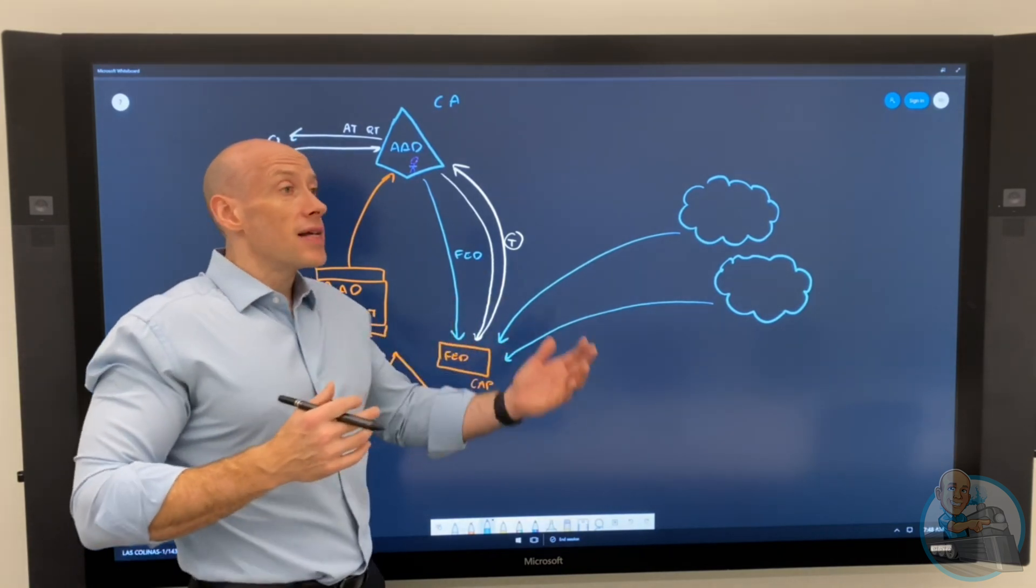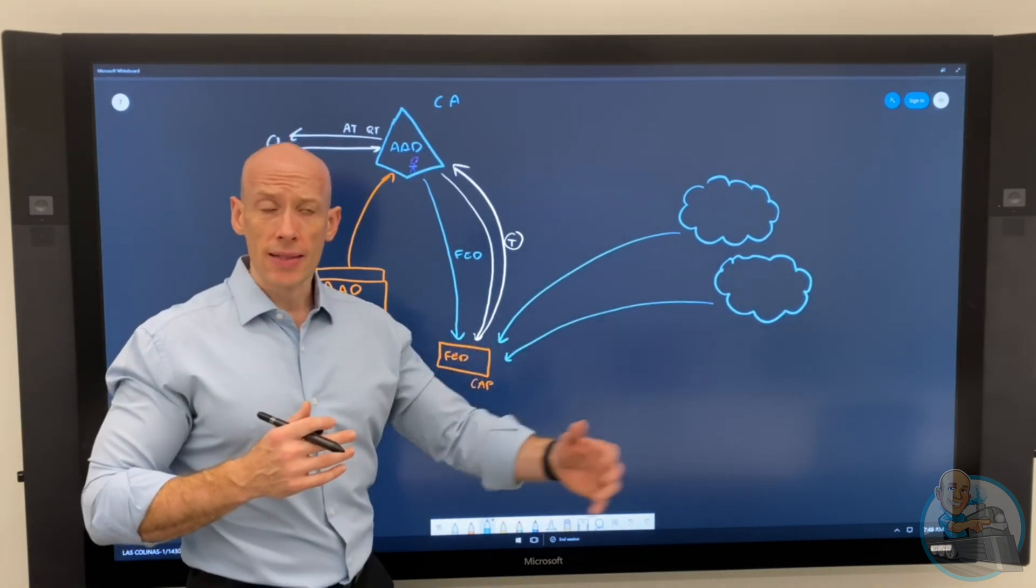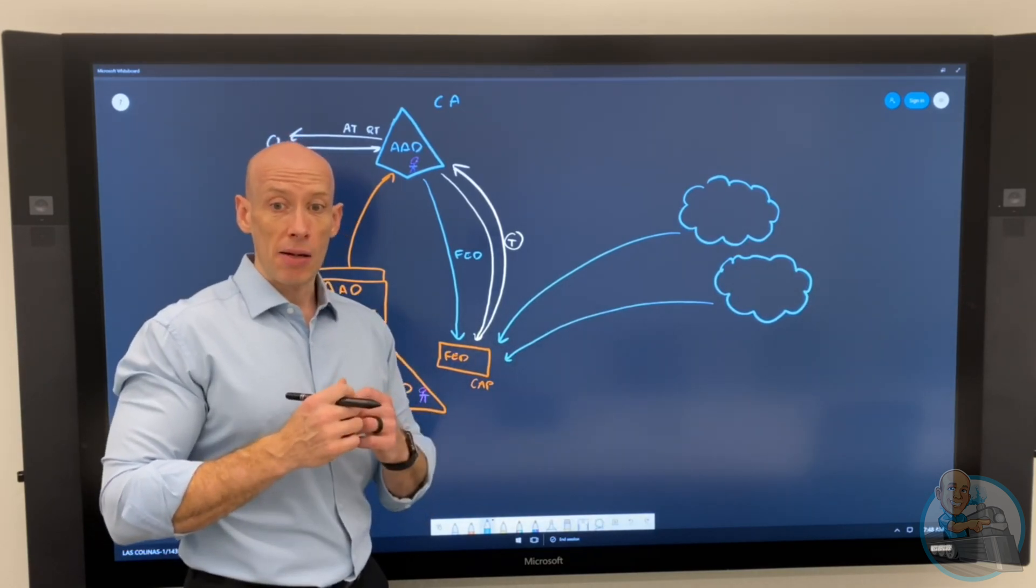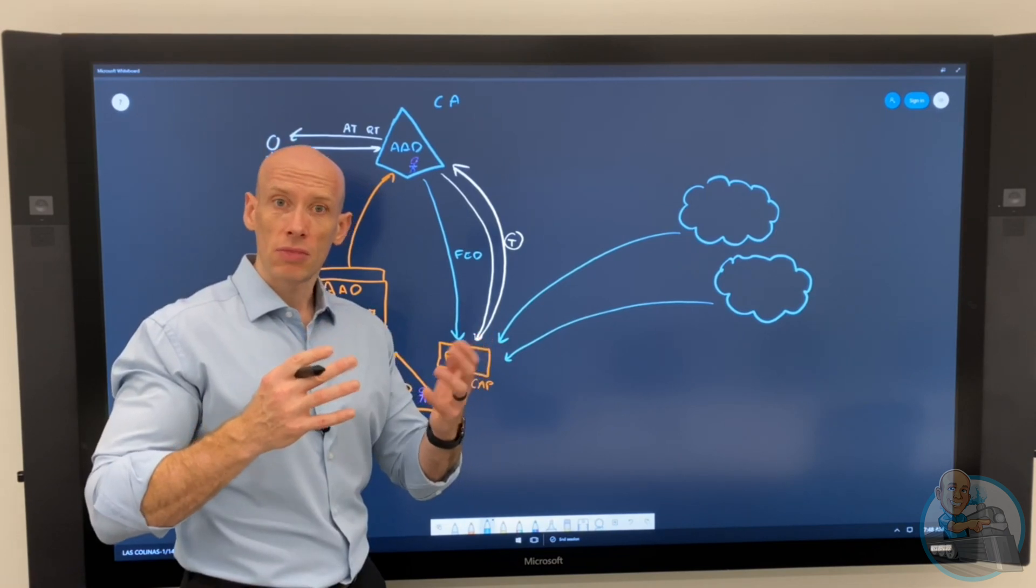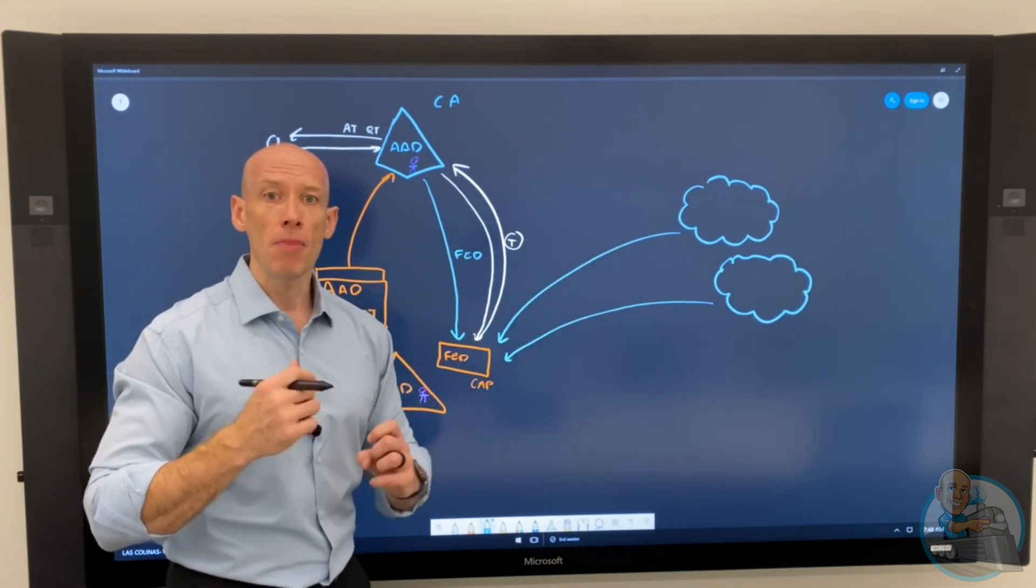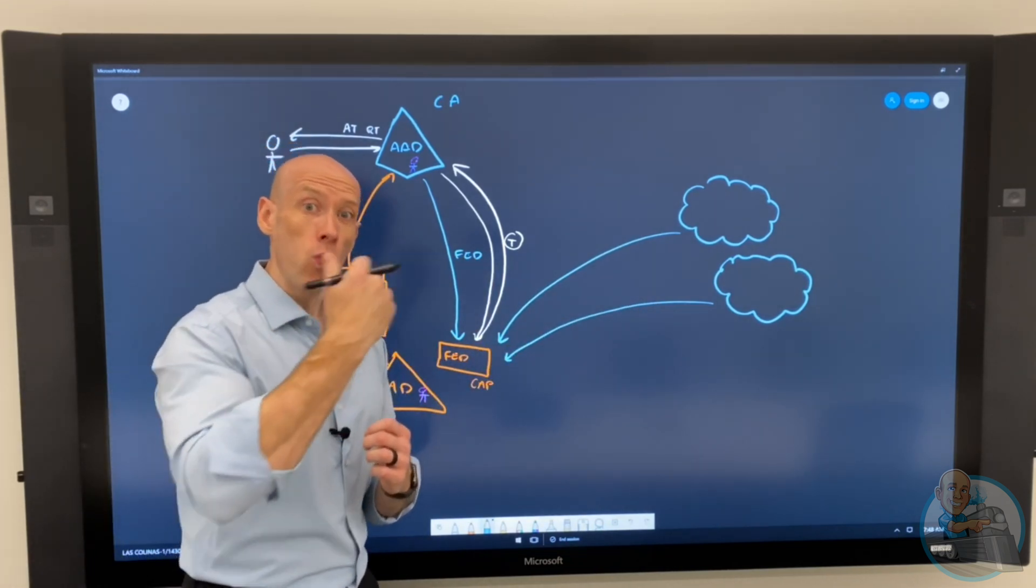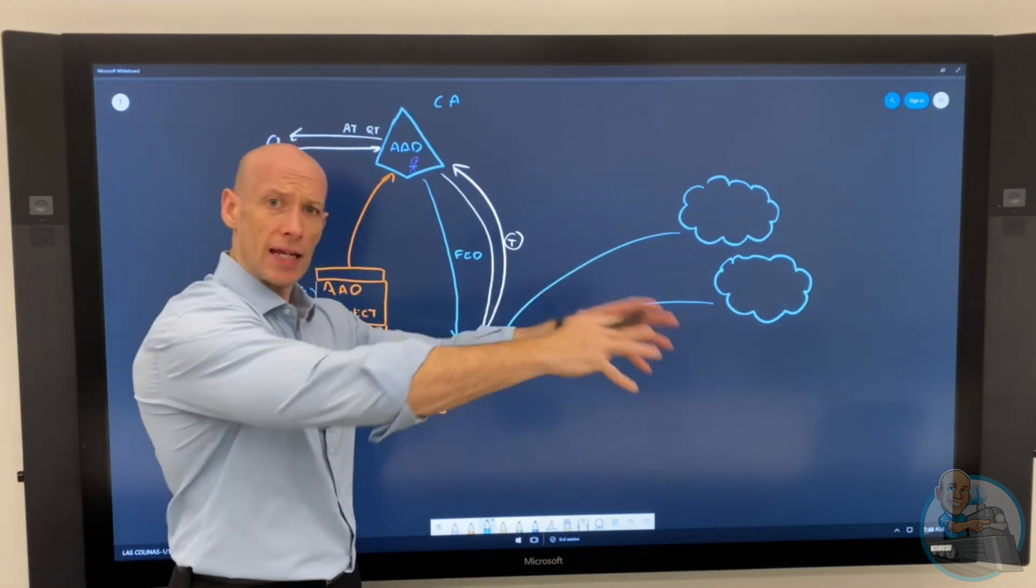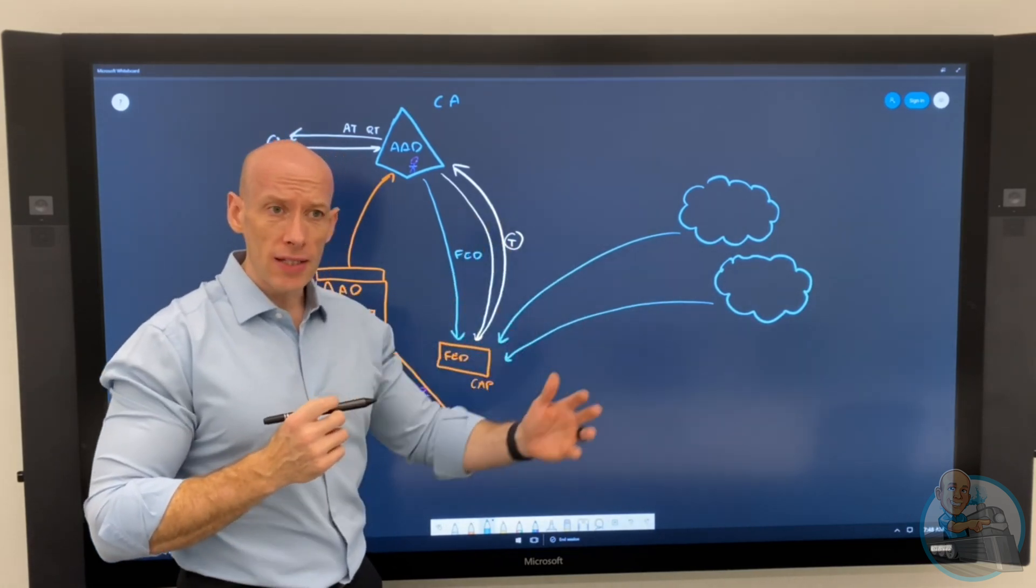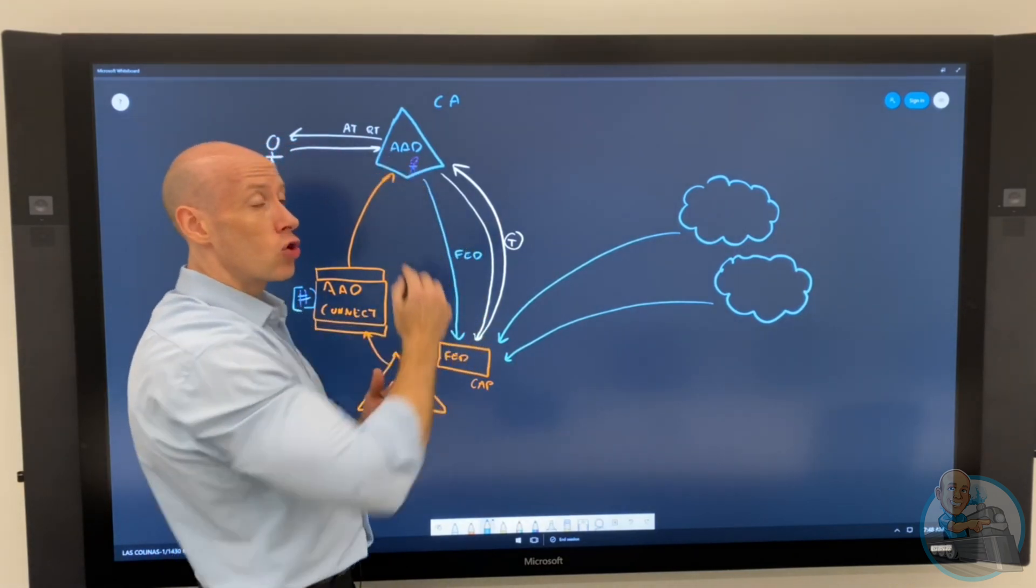That's why I have conditions and controls. Conditions could be device health, it could be apps I'm trying to access, it could be users groups, it could be device state, location, countries, corporate location. Then my controls could maybe block access, it might require things like MFA. And that's how we want to do MFA, not just blanket turned on. Hey, based on some policy.